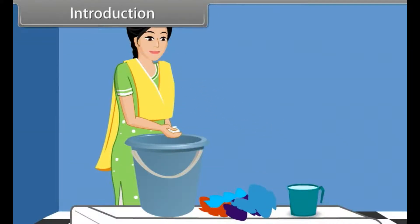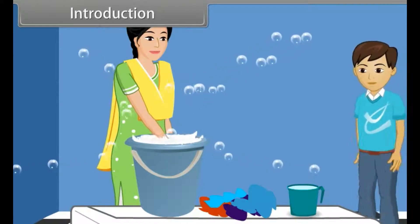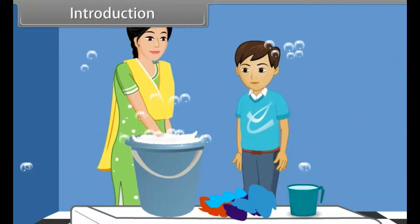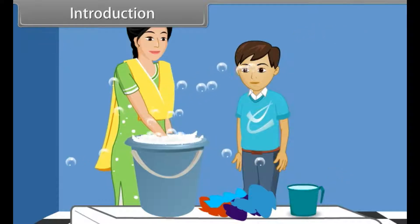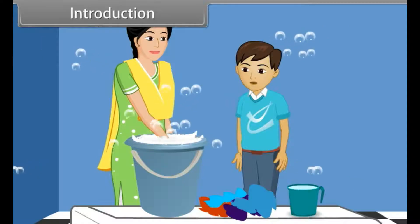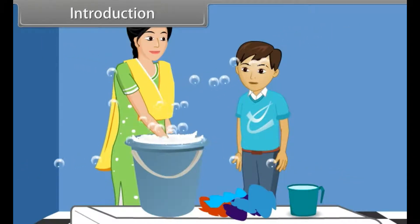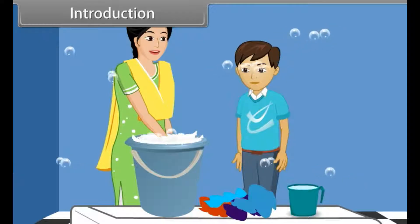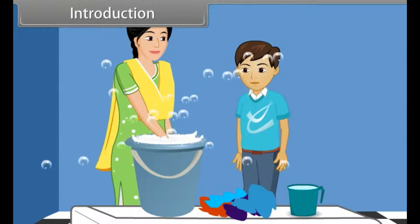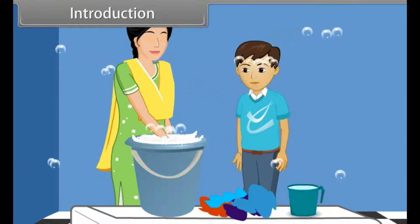Introduction. Ravi's mother is pouring detergent powder into the water bucket and starts shaking well by hands. Due to this, they have produced a lot of soap bubbles and are coming out from the bucket. Ravi watches this curiously and asks his mother why soap bubbles are stable while water bubbles are not.